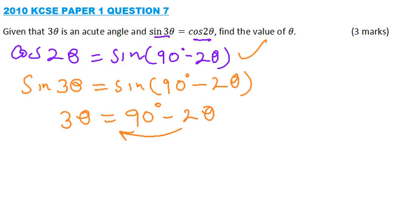So we have 3 theta plus 2 theta equals 90. And therefore, we have 5 theta equals 90 degrees.